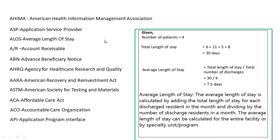ALOS stands for Average Length of Stay. Average Length of Stay is calculated by adding the total length of stay for each discharge resident in a month and dividing by the number of discharge residents in a month. The average length of stay can be calculated for the entire facility or by specialty unit per program.